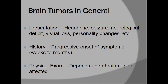In general, brain tumors usually present with headache, seizures, neurological deficit, visual loss, personality changes, and hearing problems. When we take the history, we get different types of presentations, such as headache lasting for weeks or months. On the basis of history and examination, we differentiate different types of brain tumors.